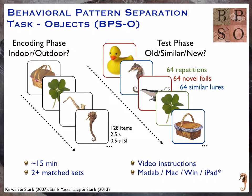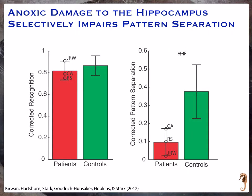Finally, we can get at pattern separation behaviorally. We had people look at a series of pictures with incidental encoding — judging indoor or outdoor — and later tested them: is it an old picture like that four-leaf clover (exact repetition), a new picture like that gravy boat, or similar but not exactly the same? That similar condition lets us ask whether people can actually discriminate and tell us it's similar but not identical. With limited hippocampal damage in anoxic patients, they're perfectly fine at identifying exact repetitions as old and novel foils as new, but show a severe impairment in identifying similar items as similar rather than identical.